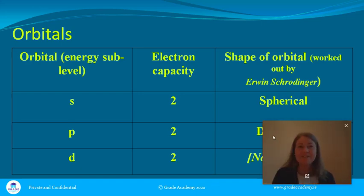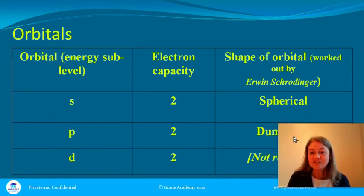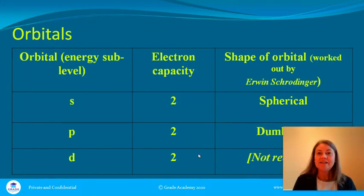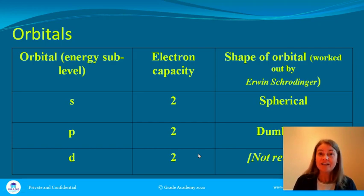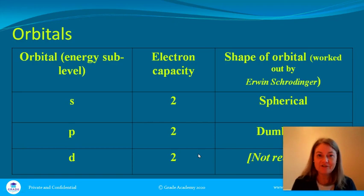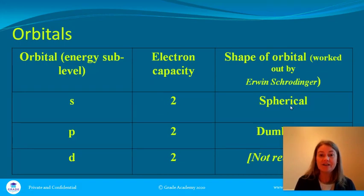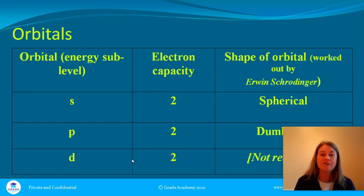Welcome back to this Great Academy lecture on atomic structure. What I want to do right now is give you the overview of how the electrons are arranged and some of the features of the electrons. We know that two is the maximum capacity that any electron can occupy in the spherical s orbitals, the dumbbell p orbitals, or the d orbitals. There are a few things you have to know about these electrons.